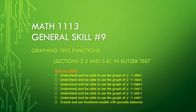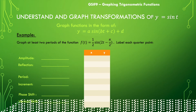So let's dive in and we're going to start with this particular function: f of t is equal to one-half the sine of the quantity 2t minus pi over 2, and we are going to work on graphing two periods of this function.